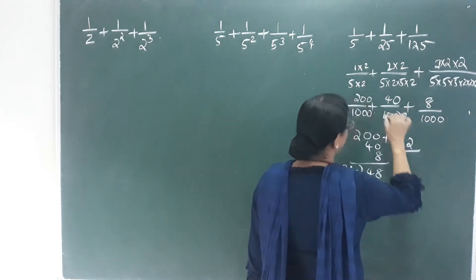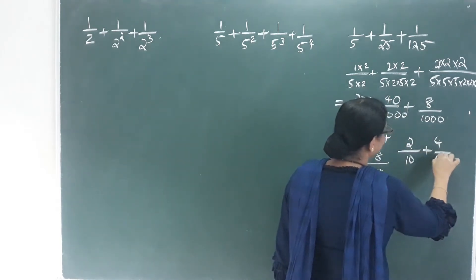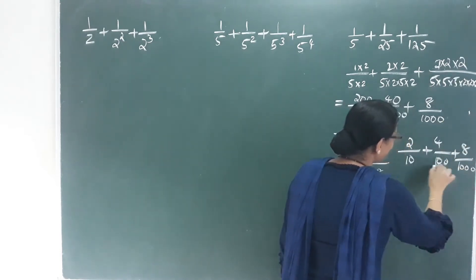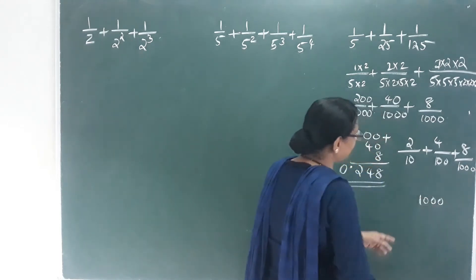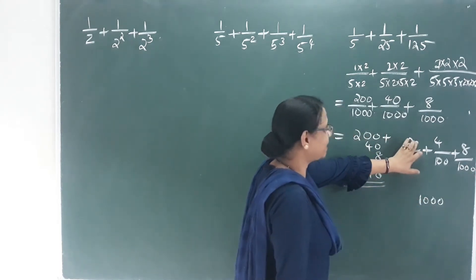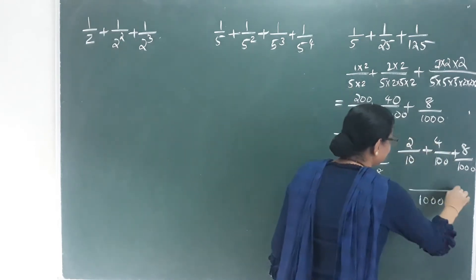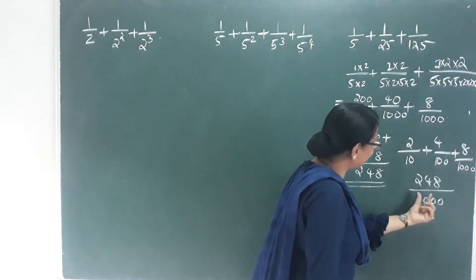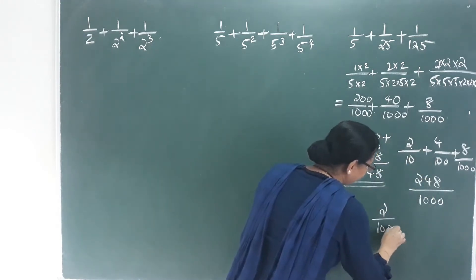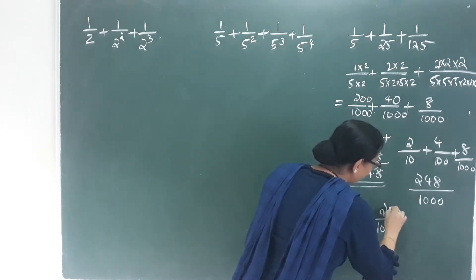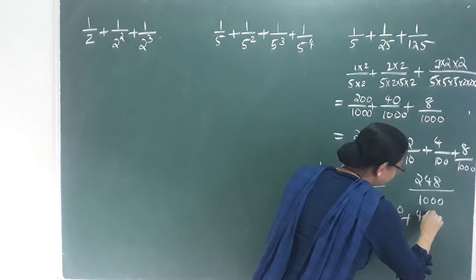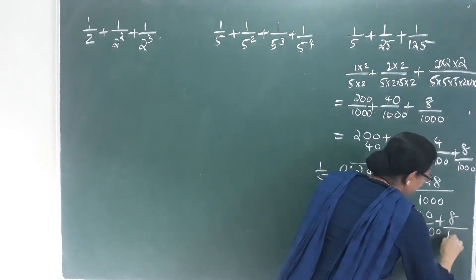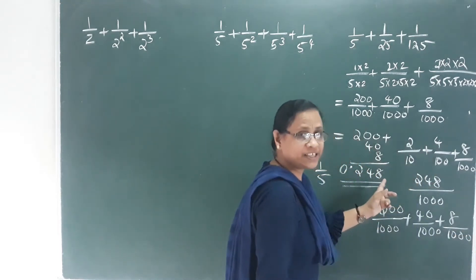We have 2 by 10, plus 4 by 100, plus 8 by 1000. The denominator is 1000. That means 200 by 1000, plus 40 by 1000, plus 8 by 1000. So 1000 is the denominator, and I split the decimal form here.